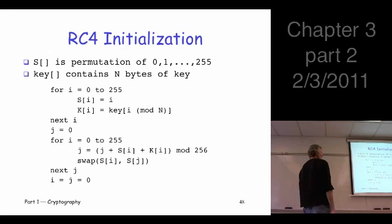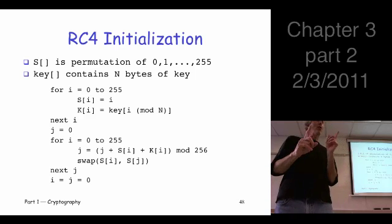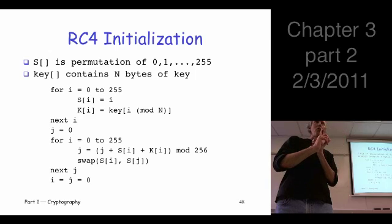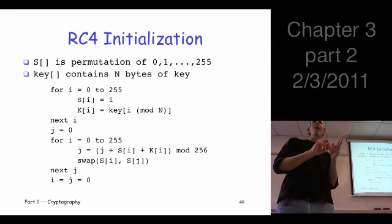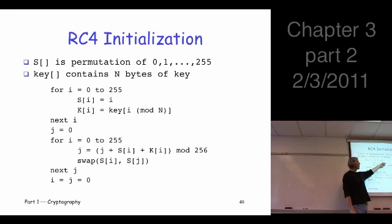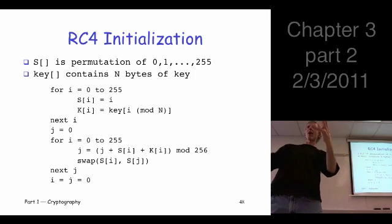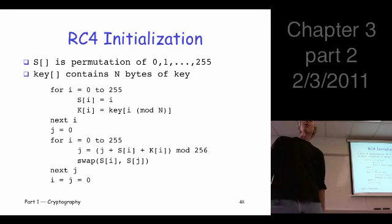Let's dive right in. Here's RC4. There are two things we have to do. First, we have to initialize the permutation using the key. Once we've done that, we're good to go to generate the key stream. So two steps: initialize, then generate the key stream. Here's the initialization — S is this special array, really the state of the algorithm. It holds the permutation of the bytes.